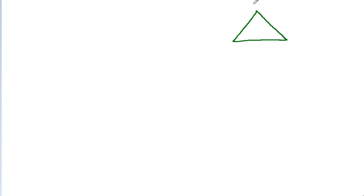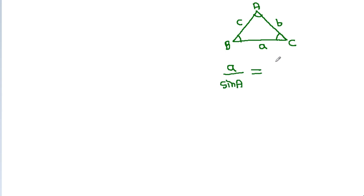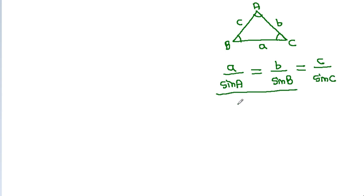And the second method: in any triangle with angles A, B, C and opposite sides a, b, c, the sine rule states a over sin A equals b over sin B equals c over sin C. From here, a over b equals sin A over sin B.